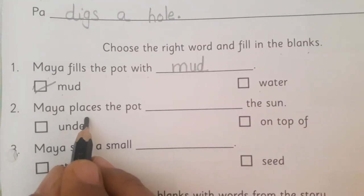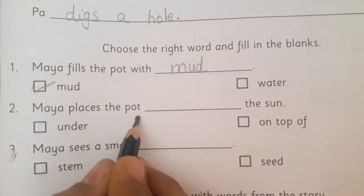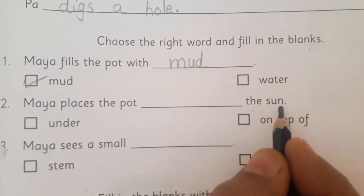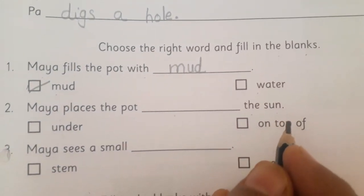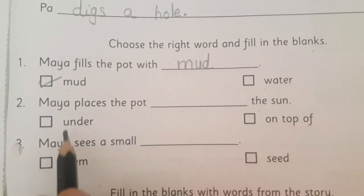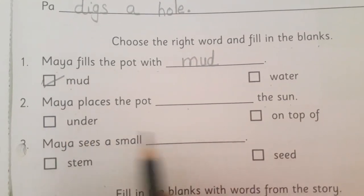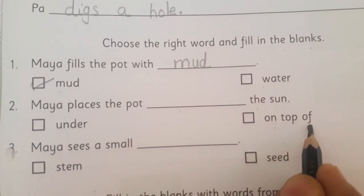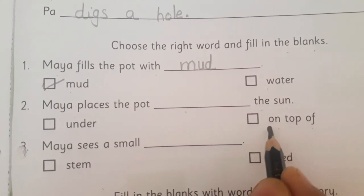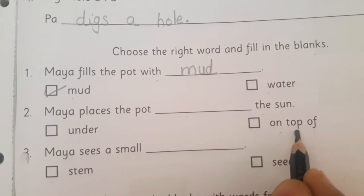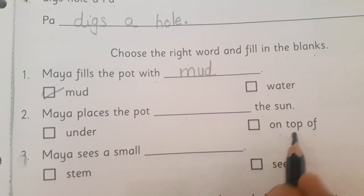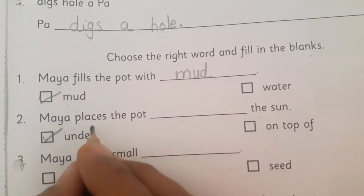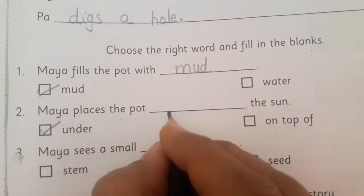Second sentence: 'Maya places the pot dash the sun.' Children, can you put something on top of the sun? No. So we write: 'Maya places the pot under the sun.'